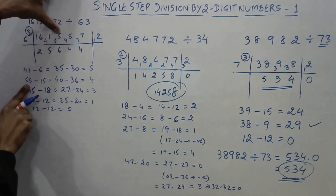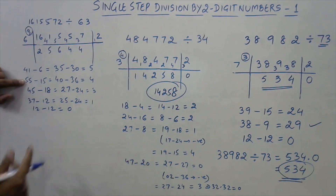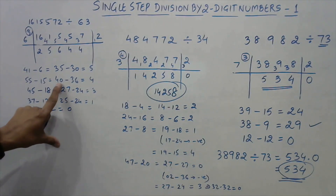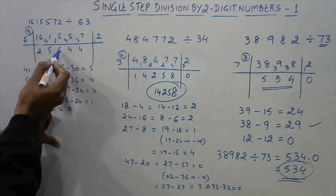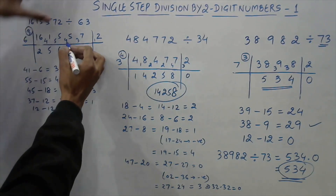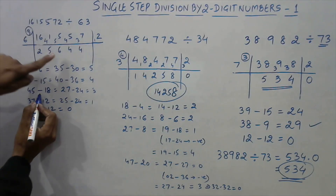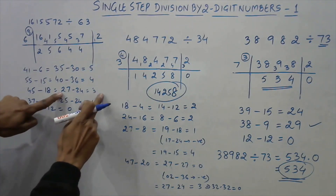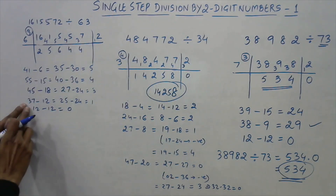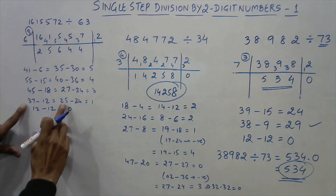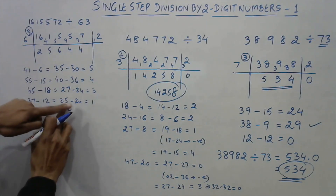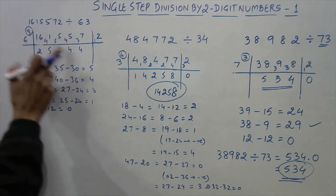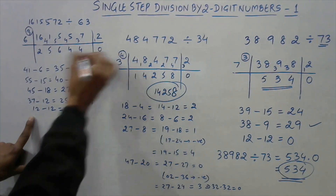Remainder 5 is written here, making 55. Now I need to subtract something first: 3 × 5 = 15, so 55 minus 15 = 40. To get close to 40: 6 × 6 = 36, remainder 4, making 45. Then 45 minus 3 × 6 = 18 gives 27. To get close to 27: 6 × 4 = 24, remainder 3, making 37. Then 37 minus 3 × 4 = 12 gives 25. To get close to 25: 6 × 4 = 24, remainder 1, making 12. Then 12 minus 3 × 4 = 12 gives 0, completing the division.